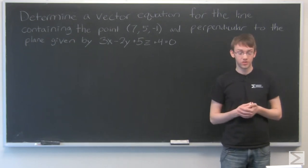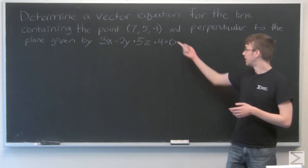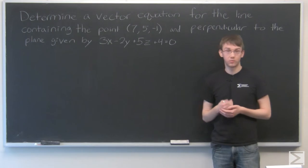Now to write a vector equation, we just need a point, and that's given to us, and a vector parallel to that line.